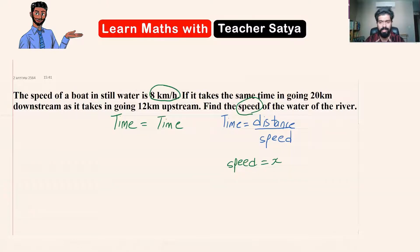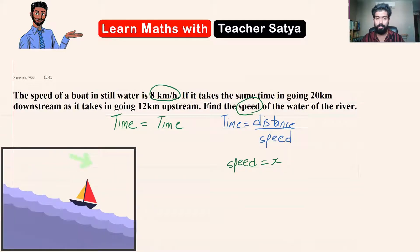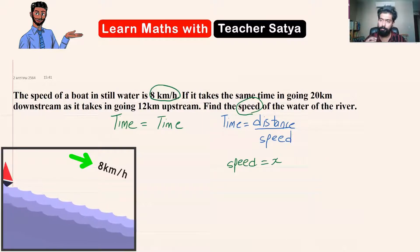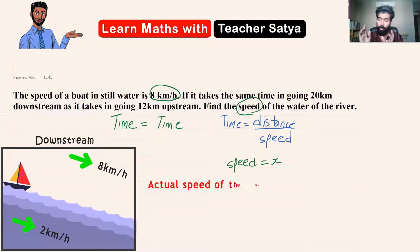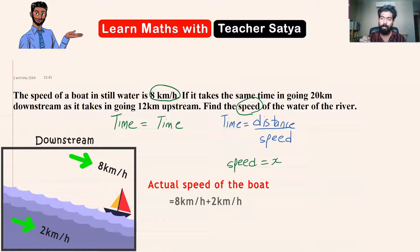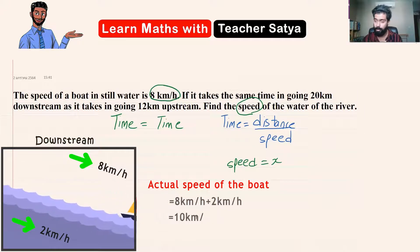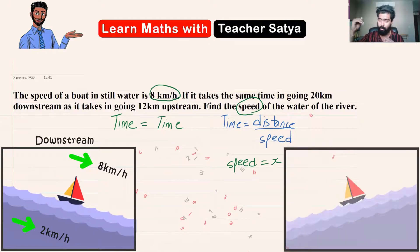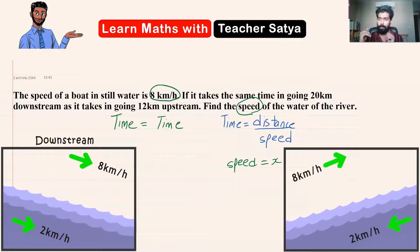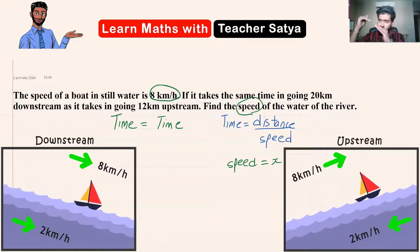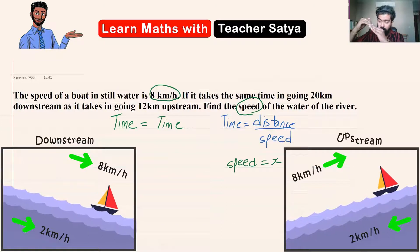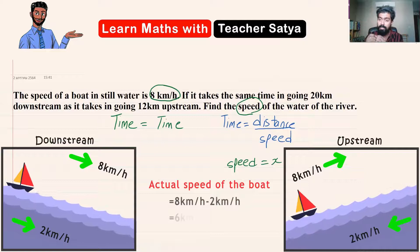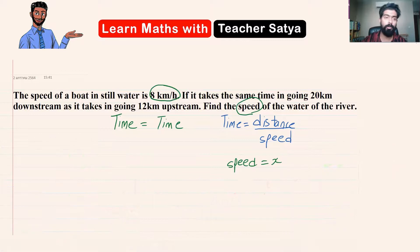Think about it this way: the speed of the boat is 8 km/h. If the speed of the water is 2 km/h and you go downstream, the actual speed of the boat would be 8 plus 2, which is 10 km/h. Now going upstream, facing the direction of the stream, it would be 8 minus 2, which gives an actual speed of just 6 km/h.